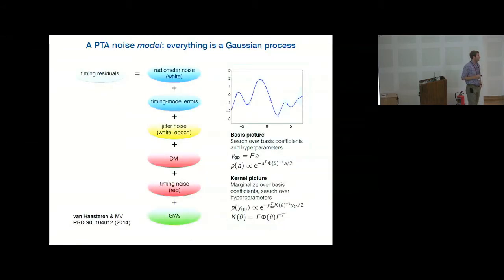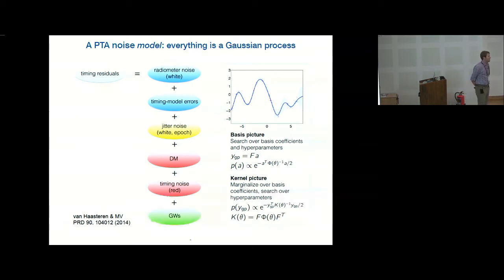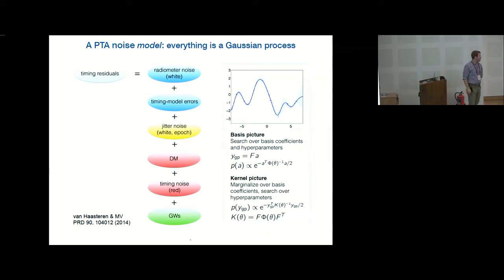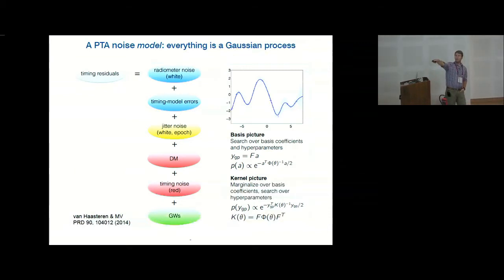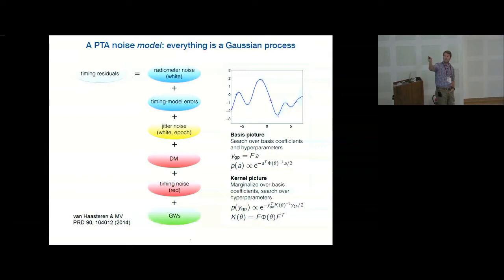Are the errors essentially the same for all pulsars? No, they're fairly different. The radiometer noise and jitter depend on the signal-to-noise of the pulsar itself, which varies enormously — this can be orders of magnitude different. Lower signal-to-noise pulsars have higher errors across radiometer noise, jitter noise, and timing model errors.